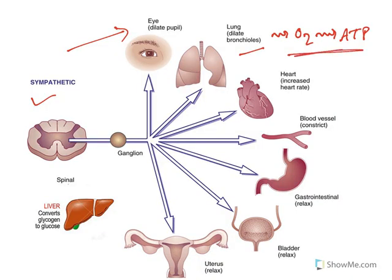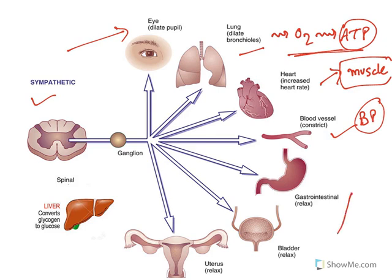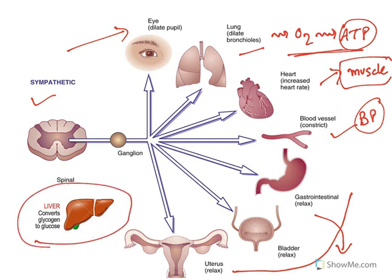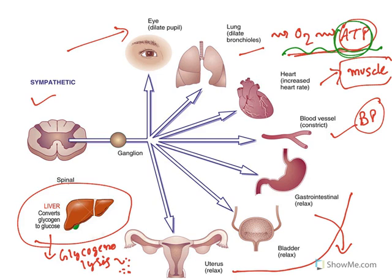Heart rate increases, boosting blood circulation to muscles, which require glucose and oxygen to generate ATP. Blood vessels constrict and blood pressure increases. The gastrointestinal tract, bladder, and uterus all relax because they are not needed during fight or flight. The liver converts glycogen to glucose through glycogenolysis, releasing glucose to provide ATP energy. Overall, the sympathetic system broadly increases energy availability so the body is ready to fight or flee.